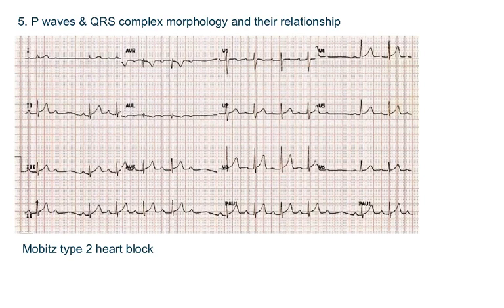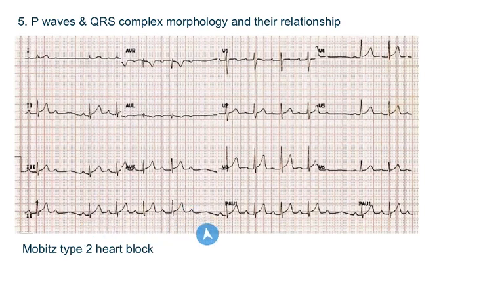Next, you have to look at the morphology of P waves and QRS complex, because in some conditions their shape can change. For example, bifid P waves in mitral stenosis, or narrow and broad complex tachycardias. Also, you have to see if each P wave is followed by a QRS complex or not. For example, in this ECG after this P wave there is no QRS complex — that means there is a drop beat. This is a Mobitz type 2 heart block. Their relationship is important in diagnosing different types of heart blocks.